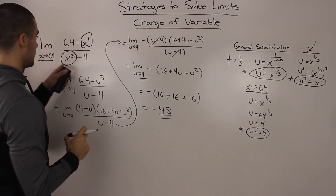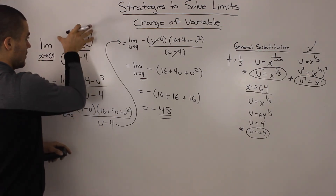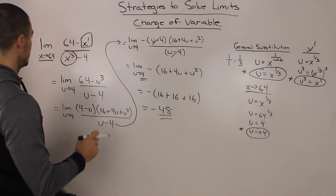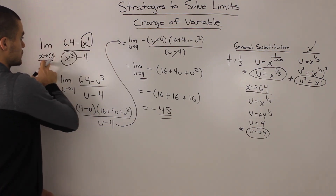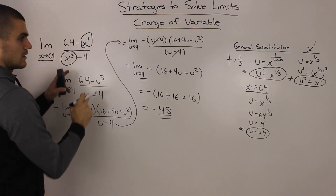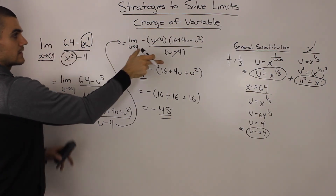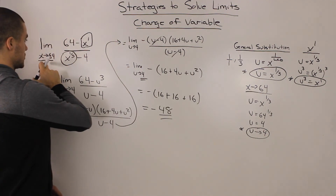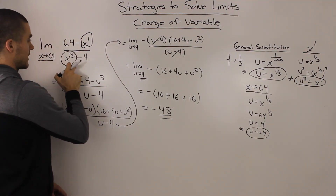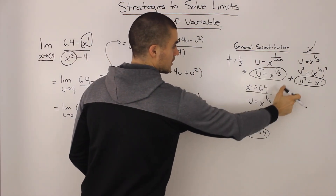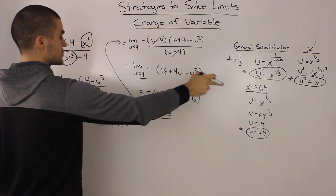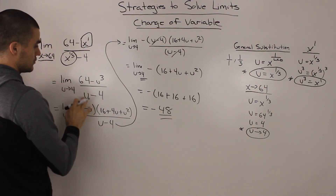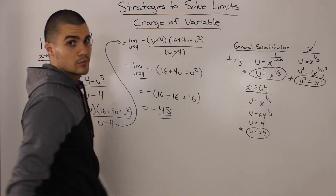So the limit of this original expression as x approaches 64 is negative 48. To recap: we tried direct substitution — that failed. We saw the weird exponent, so we used the change of variable strategy, made a general substitution, found expressions for the limit condition and the x terms, substituted everything to get a new limit in u, factored as a difference of cubes, did some algebra, and ended up with negative 48.